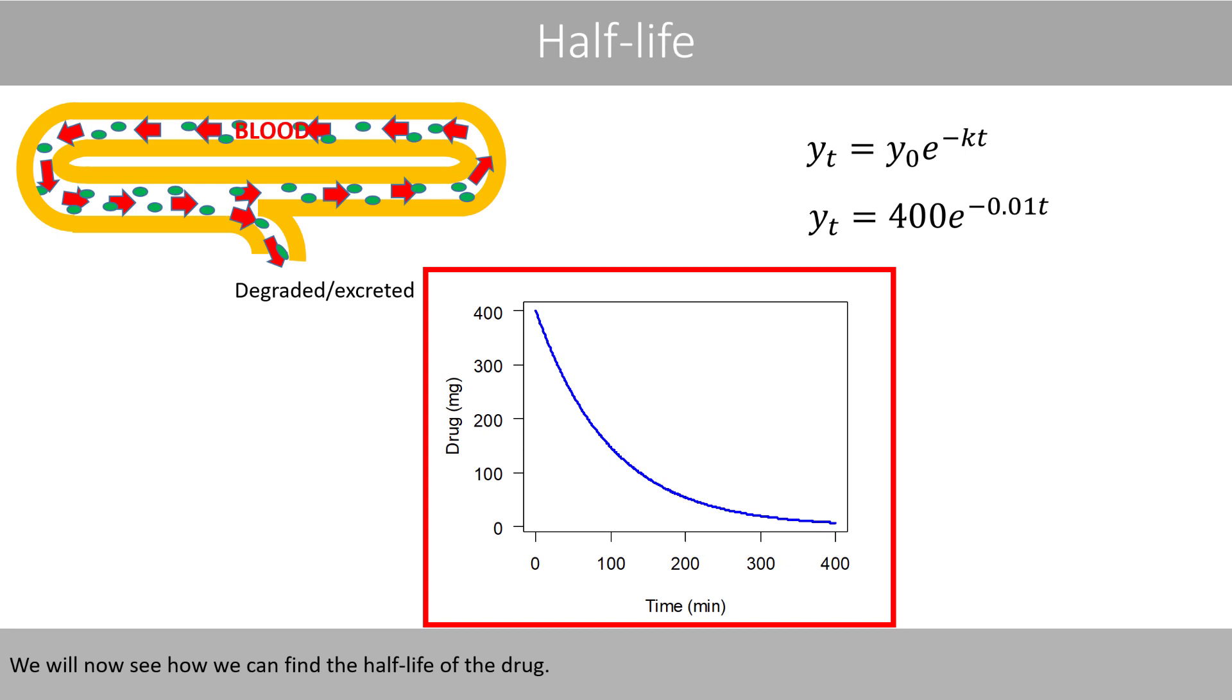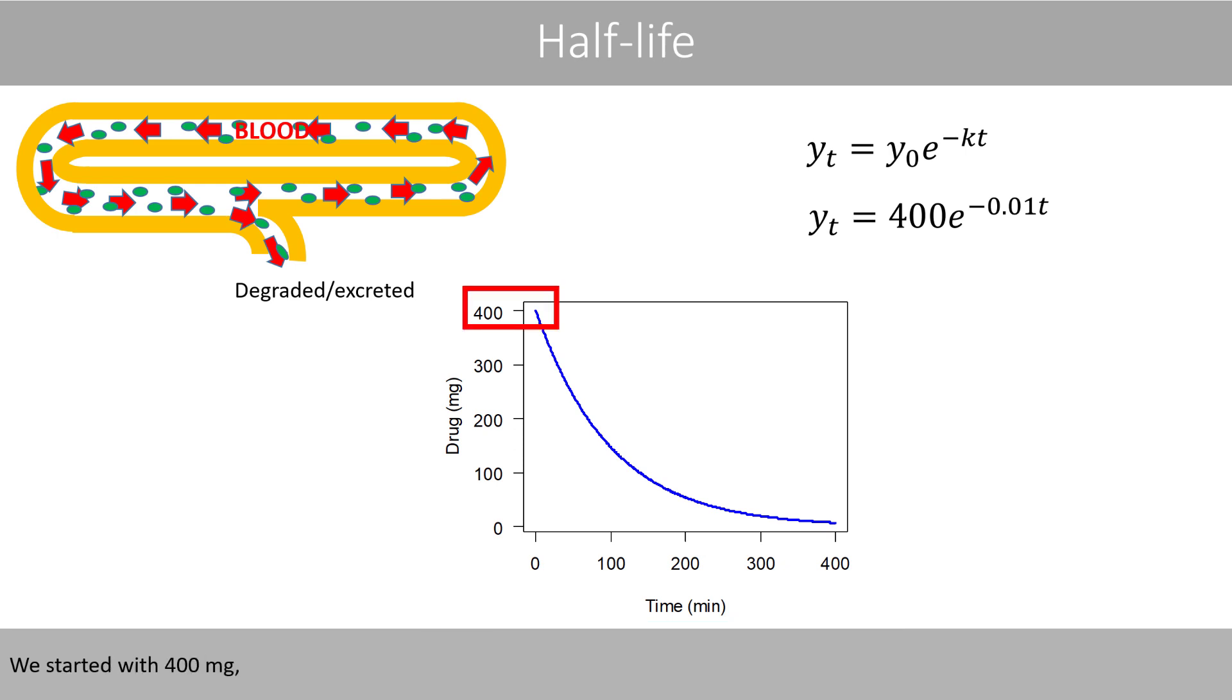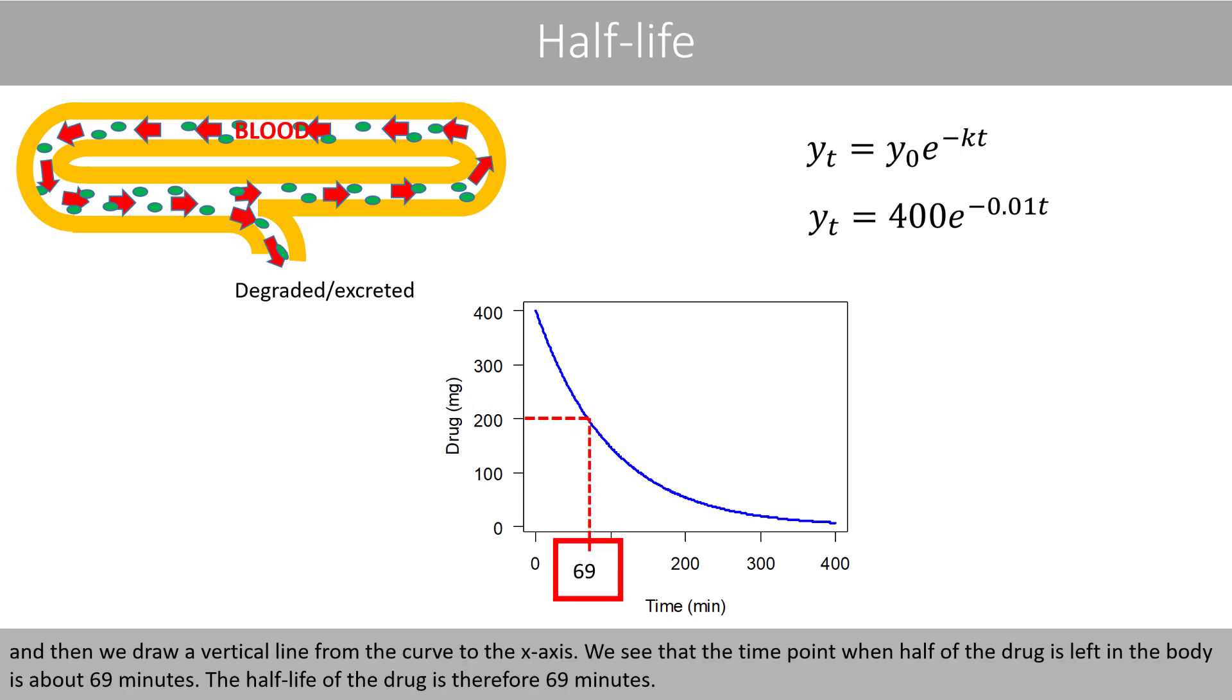We'll now see how we can find the half-life of the drug. We started with 400 mg and half of 400 is 200. We therefore draw a horizontal line from 200 until we hit the blue curve, and then we draw a vertical line from the curve to the x-axis. We see that the time point when half of the drug is left in the body is about 69 minutes. The half-life of the drug is therefore 69 minutes.